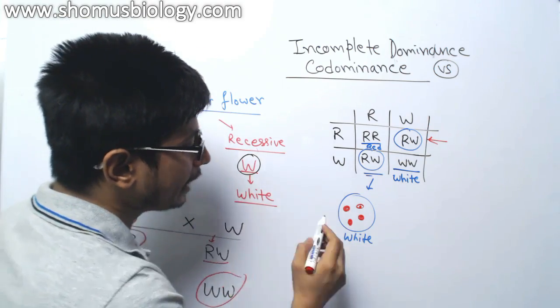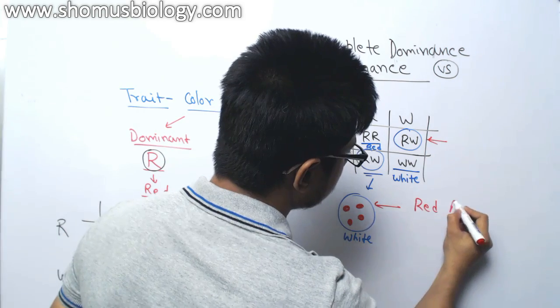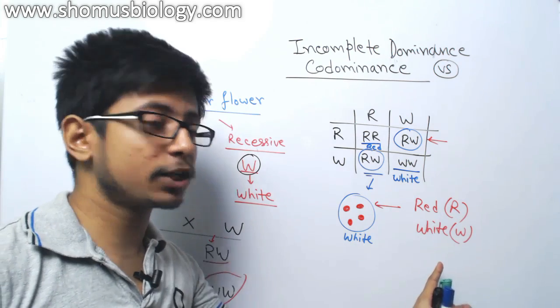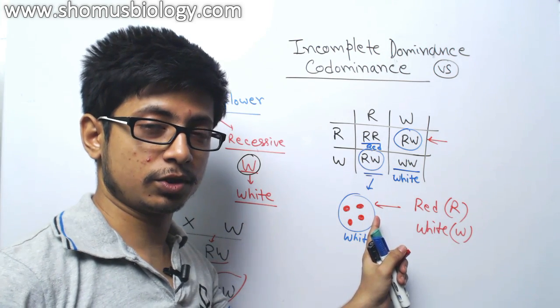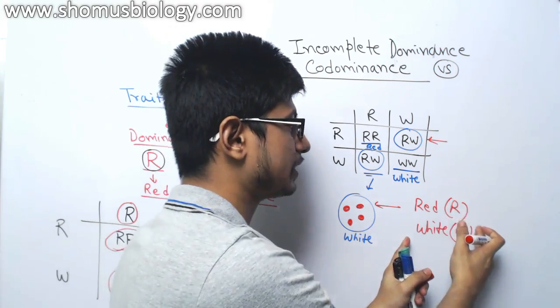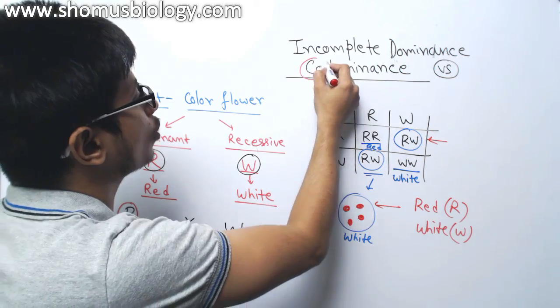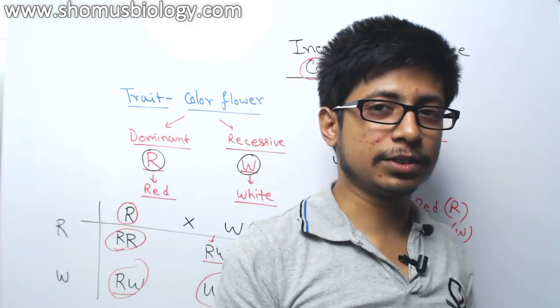So here we see the effect of red gene which is capital R and white gene both which is capital W, both are shown in the F1 generation. So the effect are present for both the alleles. So that is why we call it as a codominance. Co- means the presence of both of those alleles together.